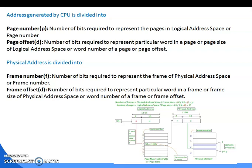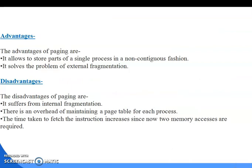The page number and page offset are generated by the CPU, and the frame number and frame offset are generated by the main memory or physical address. The advantages of paging are: it allows storing parts of a single process in a non-contiguous fashion, and it solves the problem of external fragmentation.